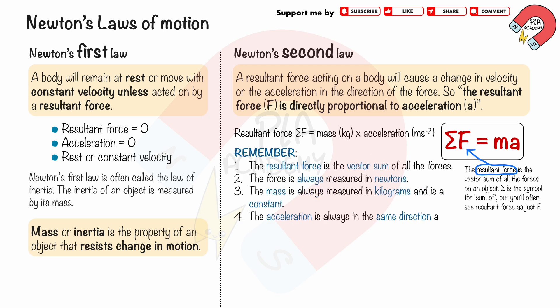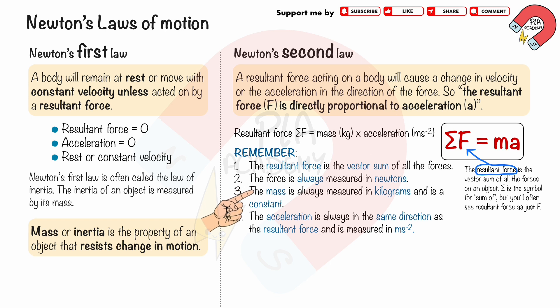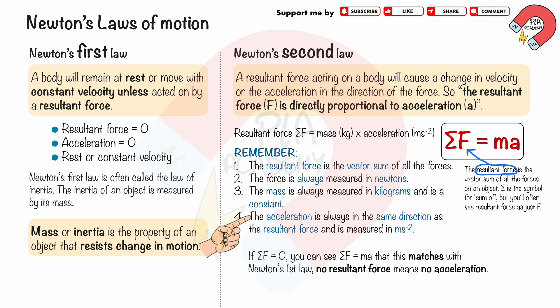Remember that the resultant force is the vector sum of all the forces. Mass is a constant and is measured in kilograms. The acceleration is always in the same direction as the resultant force and is measured in metres per second squared. If the resultant force equals zero, from ΣF = ma, this matches Newton's First Law: no resultant force means no acceleration.